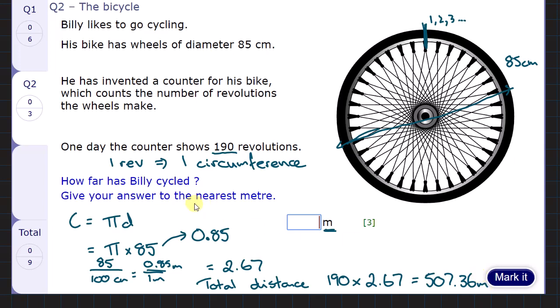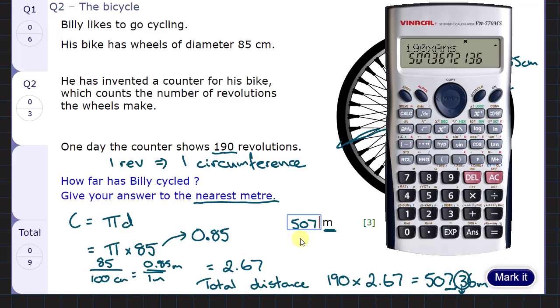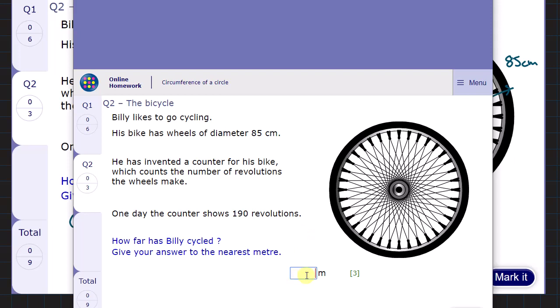Now you want the answer to the nearest metre. The nearest metre, I want to know about the 7. 3 says round down. So I need an answer 507. Let's go and check it in the sheet. 507. Click mark it. And I'm correct. I've got three marks.